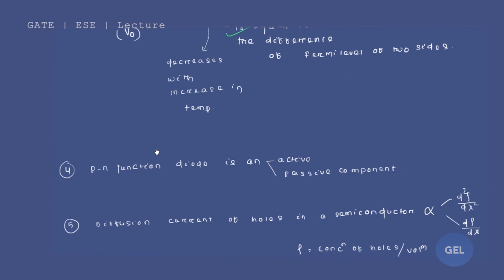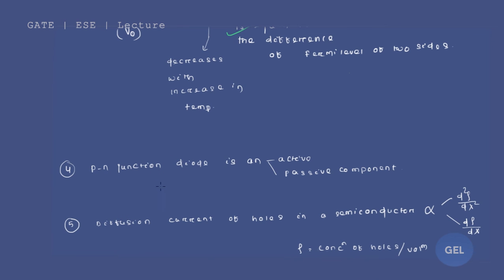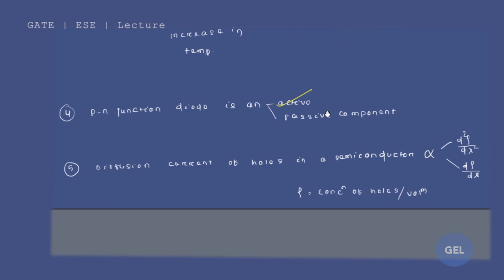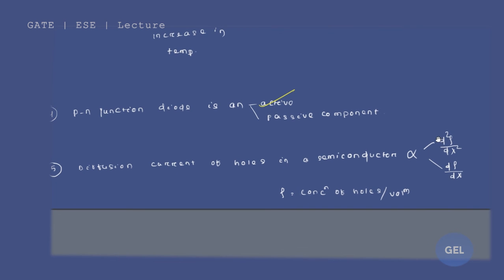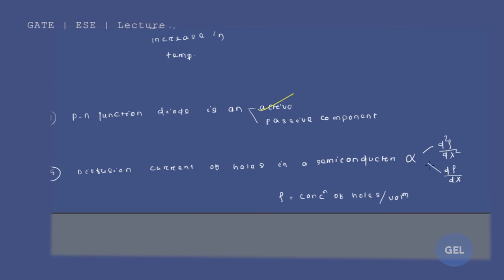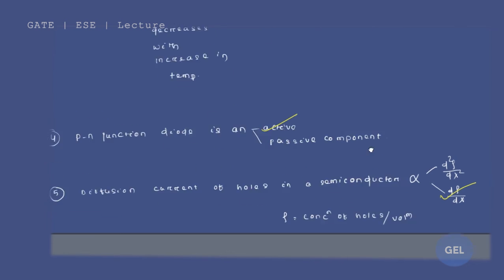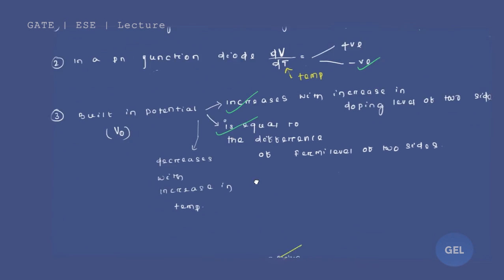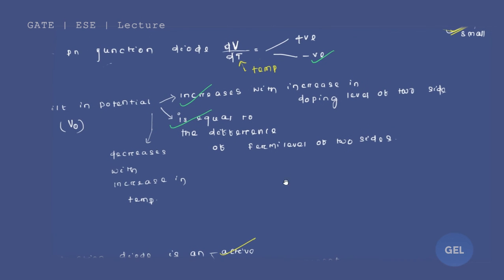Fourth point: a PN junction diode is an active device — always remember this. Fifth point: diffusion current of holes in a semiconductor is always proportional to dρ/dx, where ρ is the concentration of holes per unit volume — the charge density of holes. The answer is dρ/dx, not d²ρ/dx². Always remember these five points for the PN junction chapter.